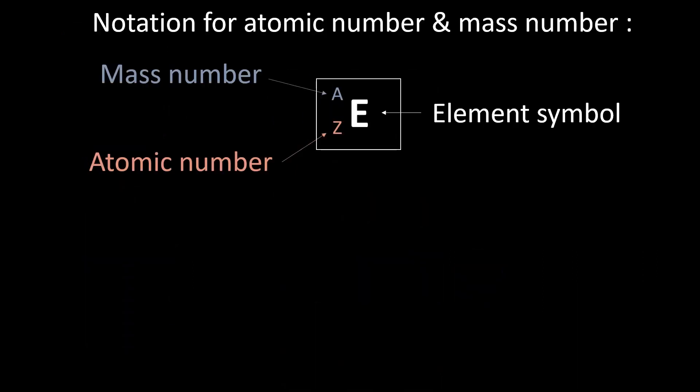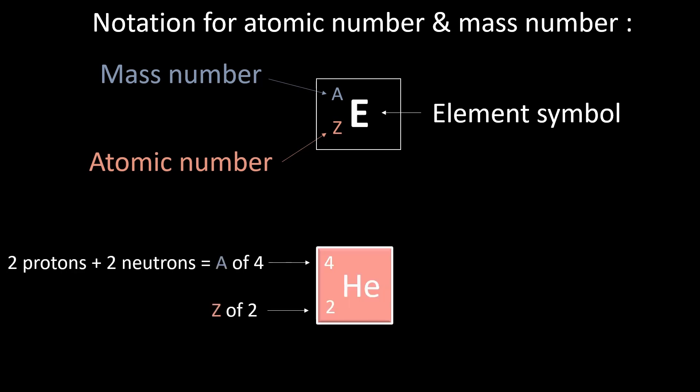A shorthand method for showing the atomic number and the mass number of an element can be shown by the following notation. Take, for example, helium. It has two protons, so an atomic number of 2, and two neutrons, so a mass number of 4.